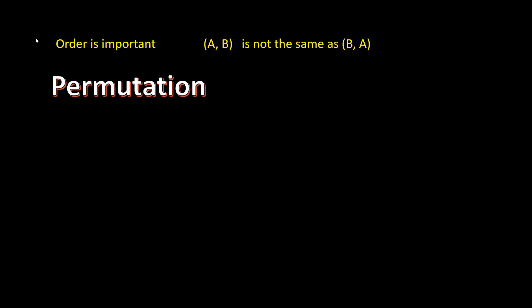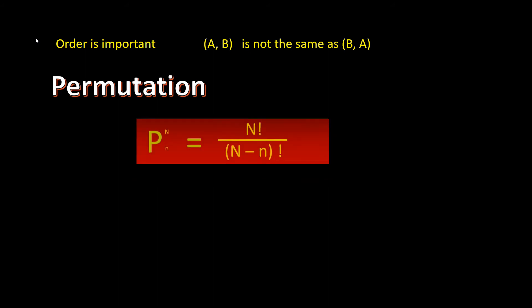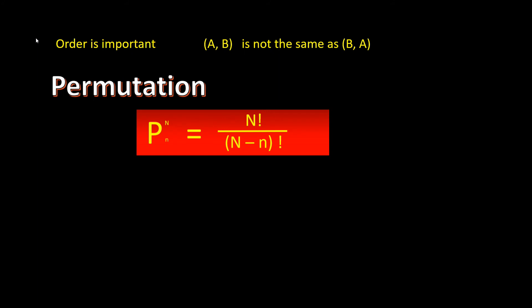The formula for permutation is instead of a C, we have a P. We still have big N and little n. So we have big N factorial, and that is the population size, and that's divided by big N minus little n. Little n is the sample size factorial.